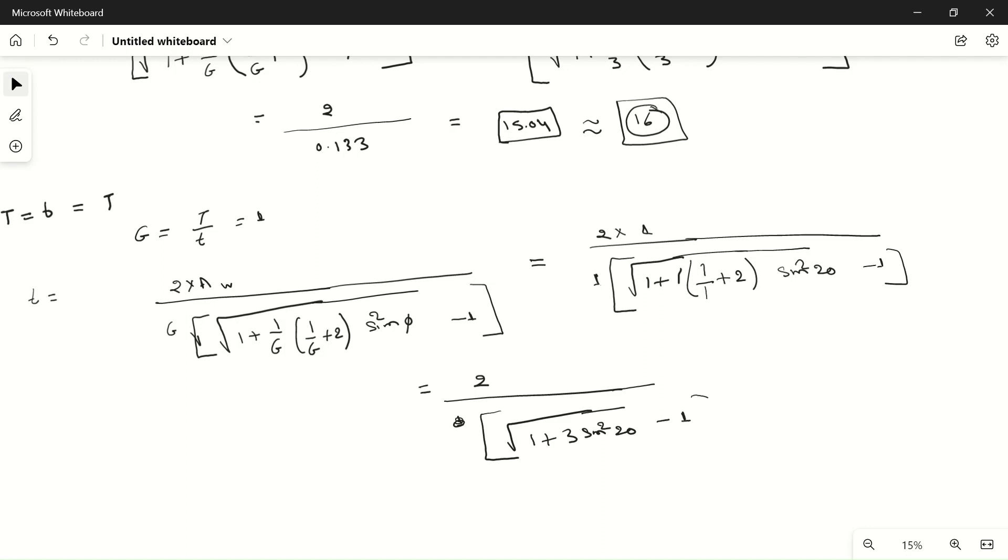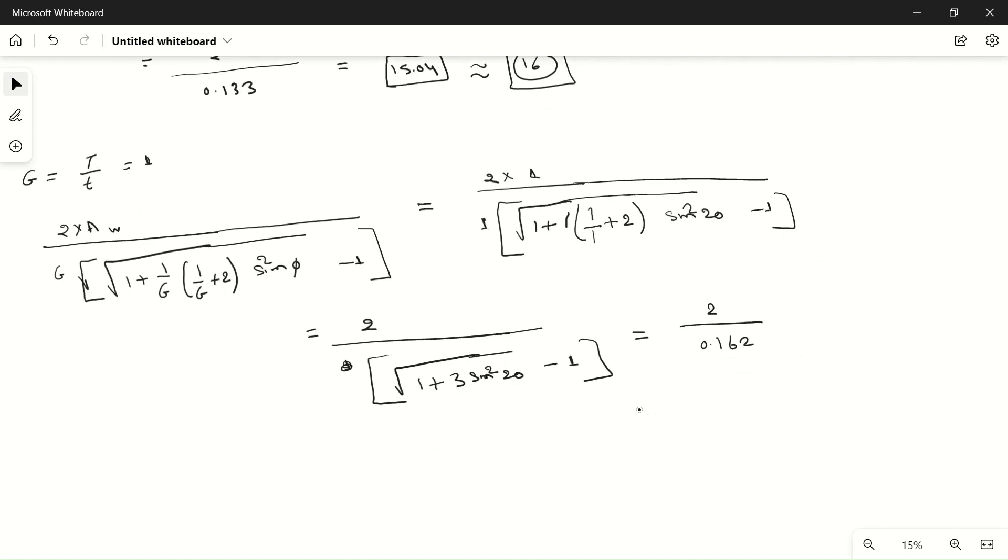Minus one, which equals 2 divided by 0.162, which equals 12.34. This is the minimum required, so we should have more than 12 teeth—the answer is 13, because teeth cannot be in fractions. Minimum number of teeth required is 13. I hope you understood this problem. If you have any doubt, please ask in the comment section. Thanks for watching this video.